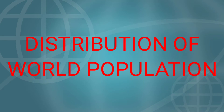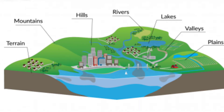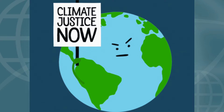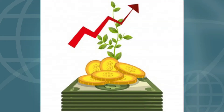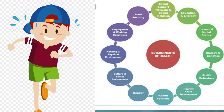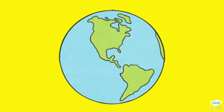Welcome to the geographic class. Today's topic is distribution of world population. The population distribution of the world is not uniform in every part of the earth due to variation in topography, climate, soil, resources, transport system, economic development, etc. Due to the dominance of land in the Northern Hemisphere and the prevalence of favorable physical and socio-economic conditions, about 90 percent of the world's total population lives in the Northern Hemisphere.